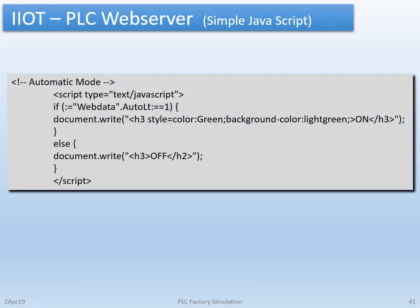The manual and auto mode control screen has one extra level of complexity in the form of some basic JavaScript in order to display a header for the system and status indicators above the manual, auto, and system start buttons. Nothing fancy. In keeping it simple, I only have one file that accomplishes all the functions required for the entire screen.